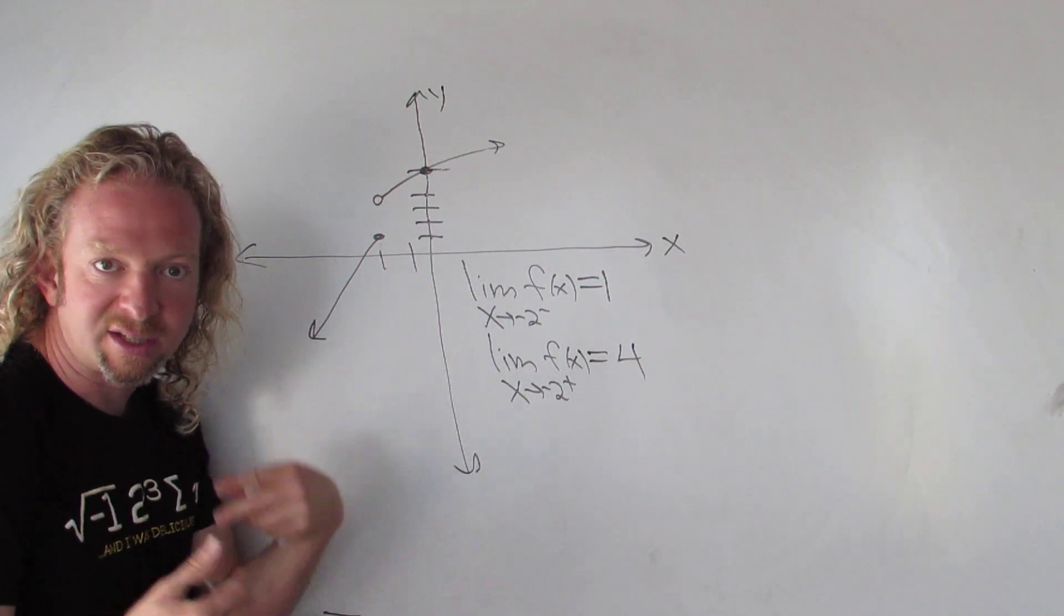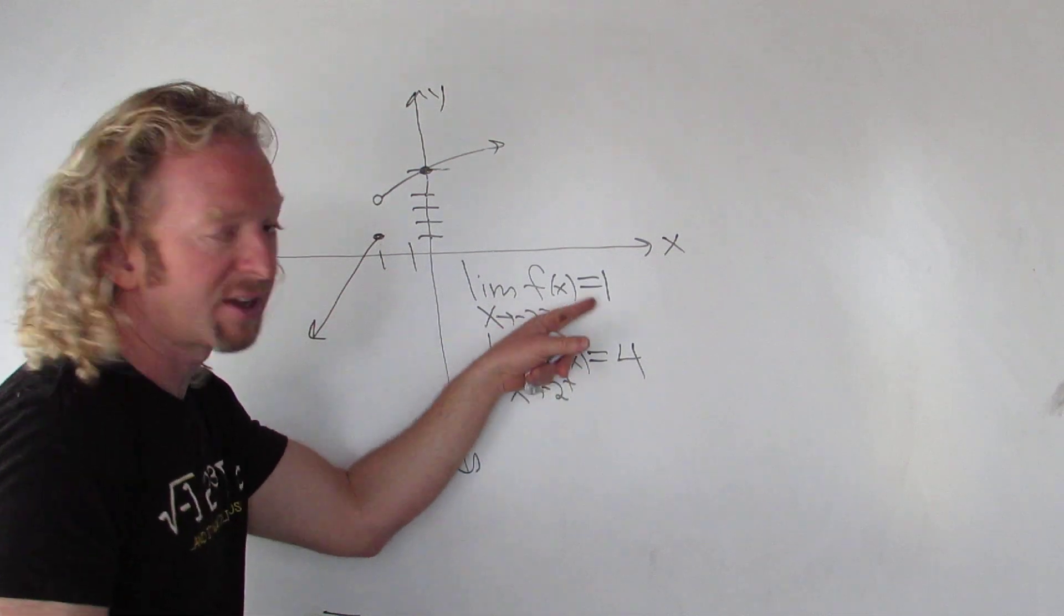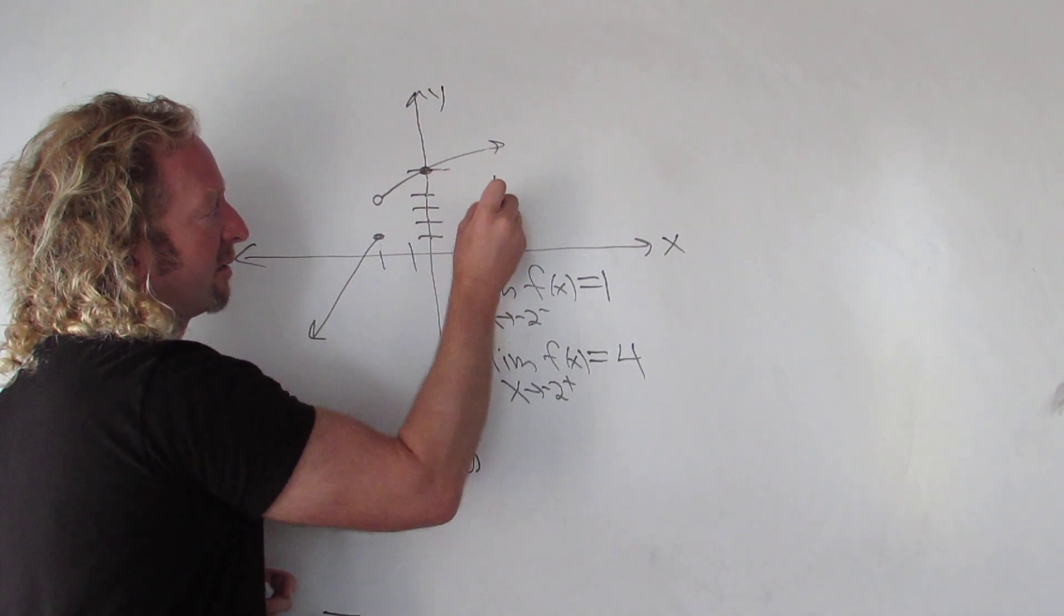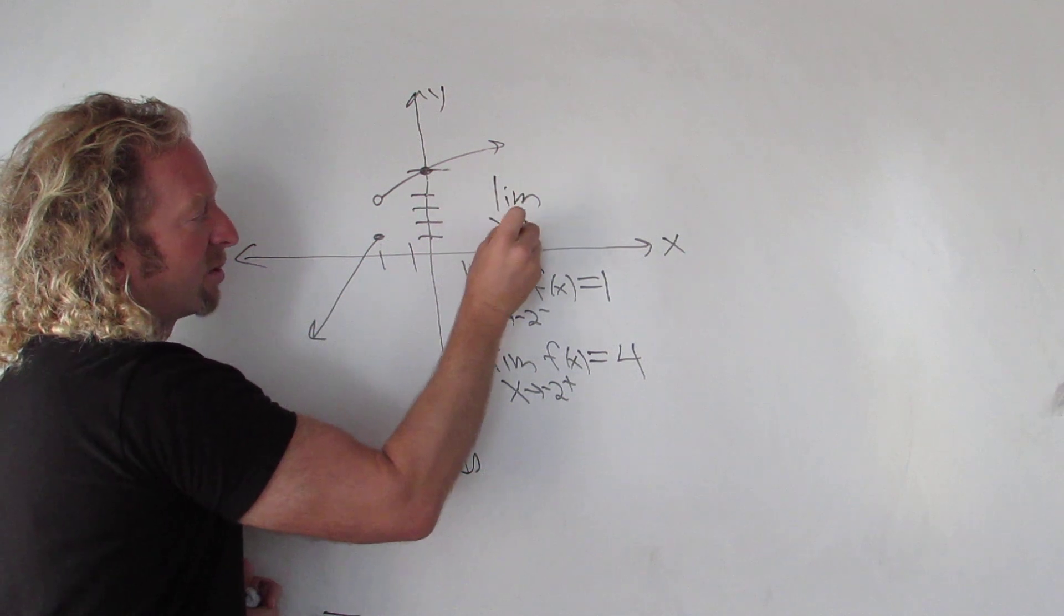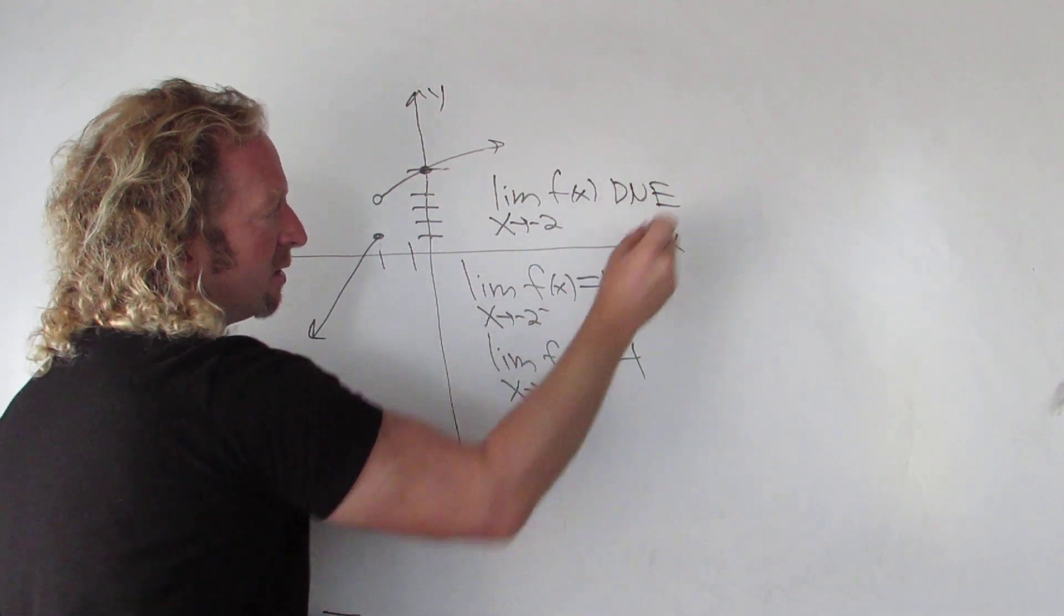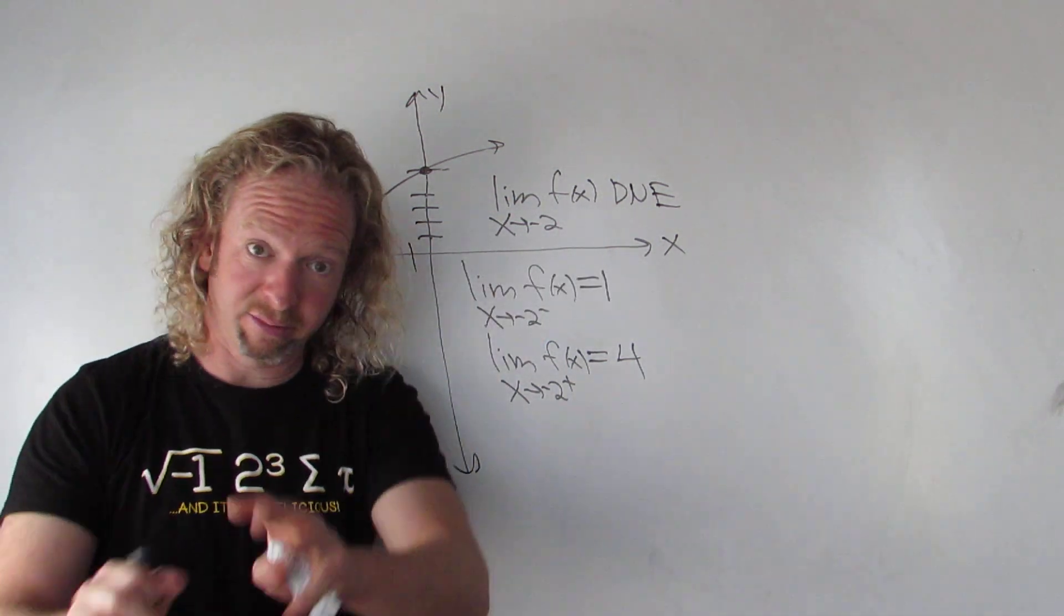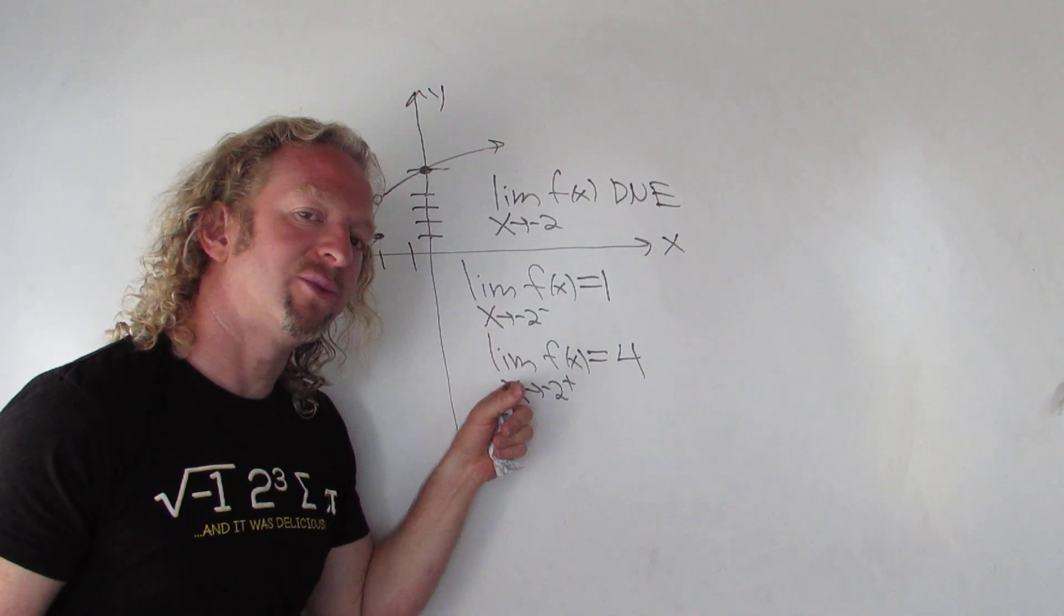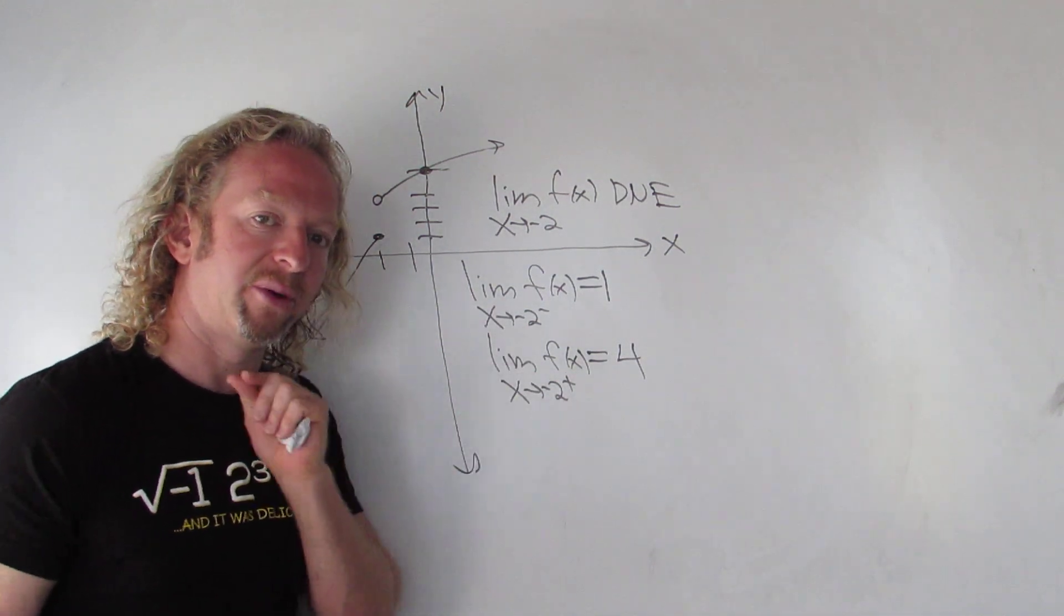Therefore, the regular limit does not exist. These numbers have to be the same. If they're the same, then that is also the value of the regular limit. Let's go ahead and write that down. So the limit as x approaches negative 2 of f of x does not exist. Remember, for a limit to exist, it has to be equal to a number, first of all. And it has to be the same number from both sides, from the left and from the right.